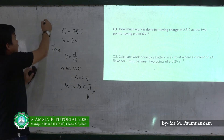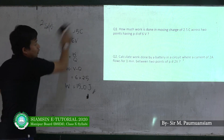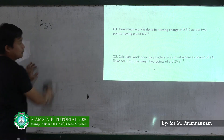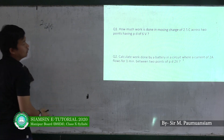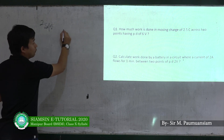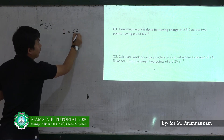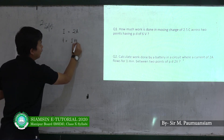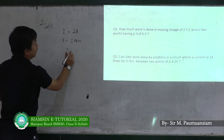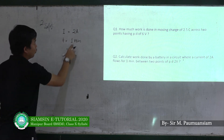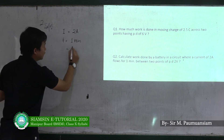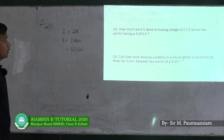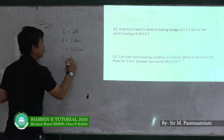Calculate the work done by a battery in a circuit where the current is 2 amperes. Time is one minute. One minute is equal to 60 seconds. The potential difference is 2 volts.